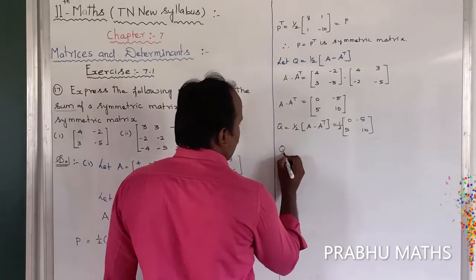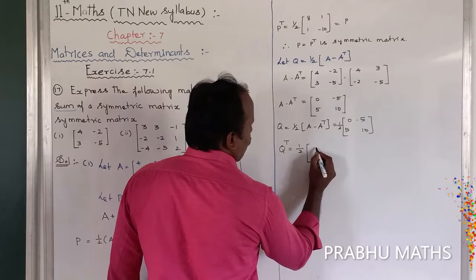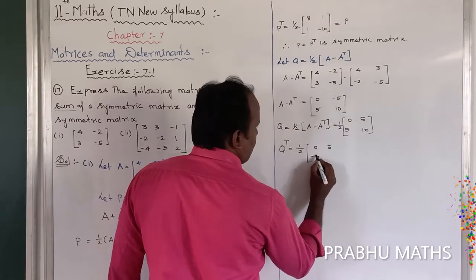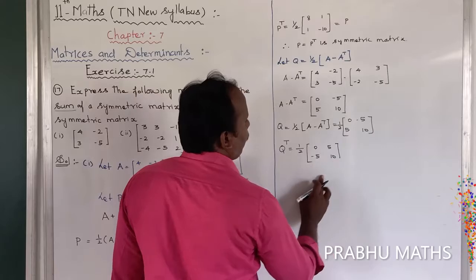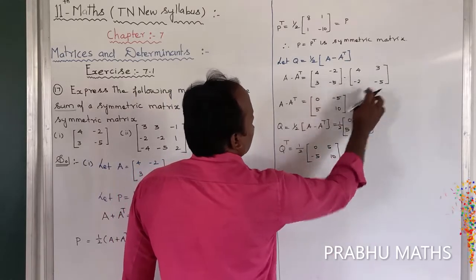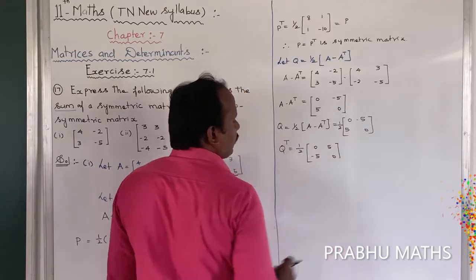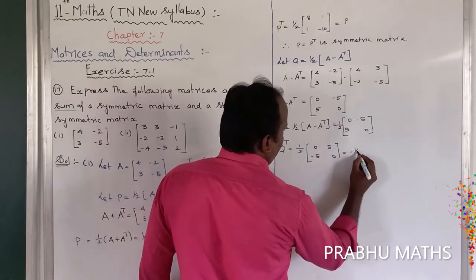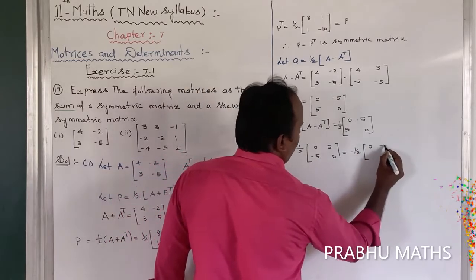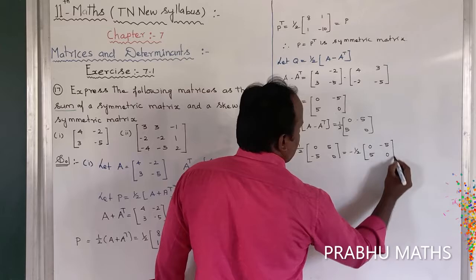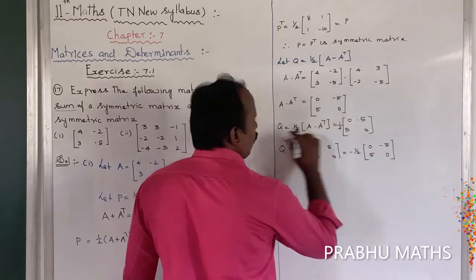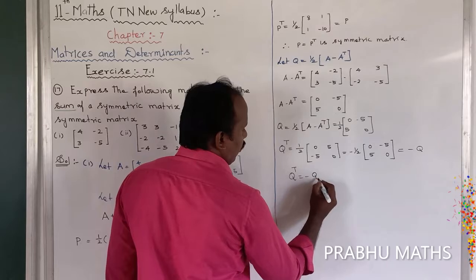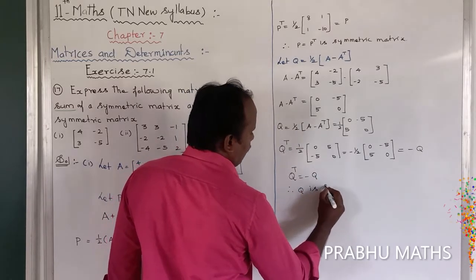Next, find Q transpose. Q transpose is equal to 1/2 into [[0, 5], [-5, 0]]. Taking out the common factor of minus, this equals minus 1/2 into [[0, -5], [5, 0]], which equals minus Q. Therefore Q transpose is equal to minus Q, so Q is a skew-symmetric matrix.